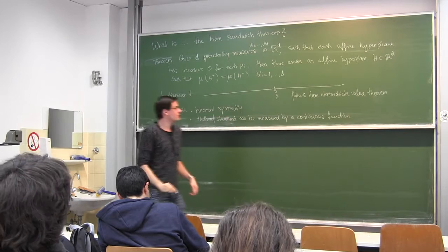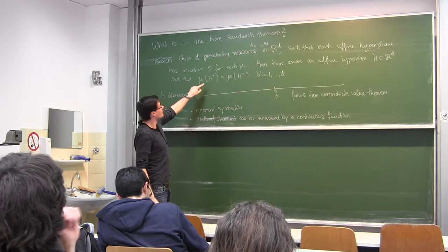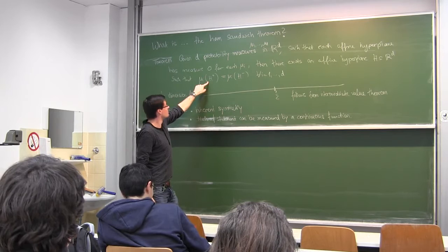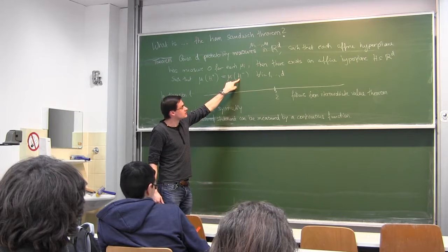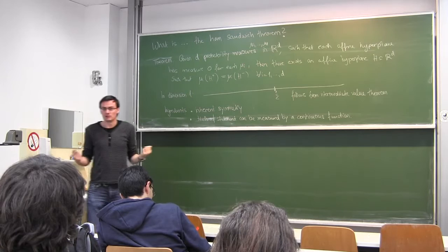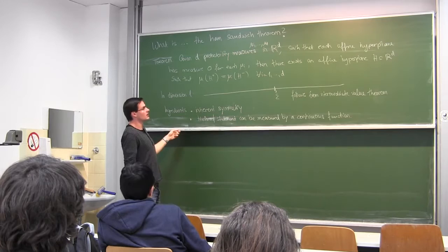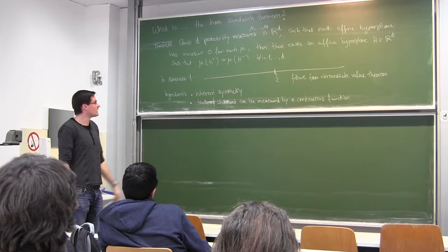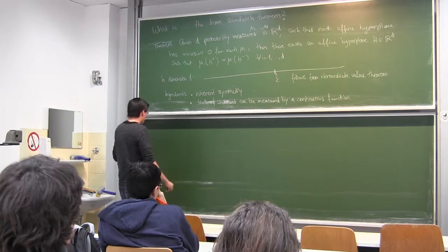And the second ingredient is whether or not our statement is true can be measured by a continuous function. What kind of function would this be here? For each measure, I look at the space of all affine hyperplanes and I compute this number minus this number. I get a vector of d entries, and if I find a hyperplane such that this vector is the zero vector, I'm done. I can build a continuous function that hits zero if and only if my statement is right. And once you have these two ingredients, which you have in very many cases, you're good to go.